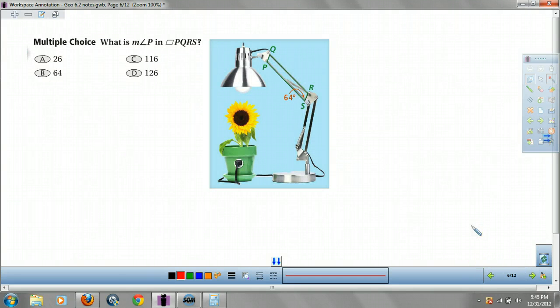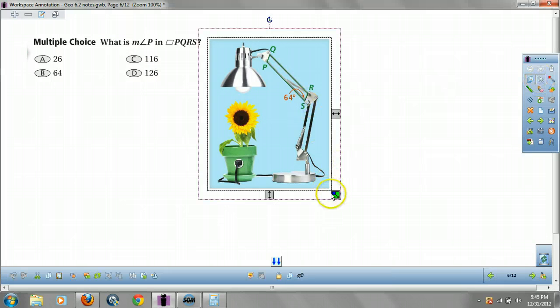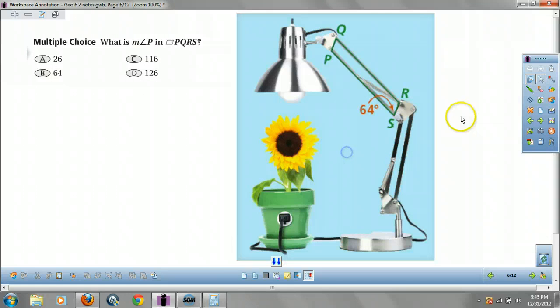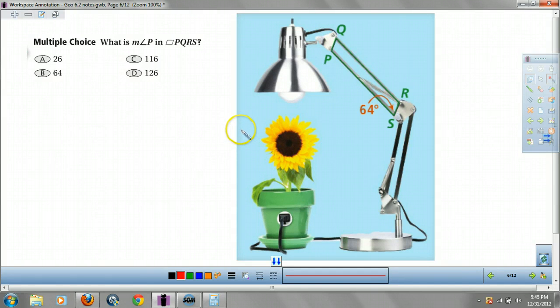Let's take a look at this guy. If this angle is 64, what is P? Well, P is going to be 180 minus 64, because they add up to 180, which is 116. What's angle R, then? 116. What's Q going to be, then? 64.